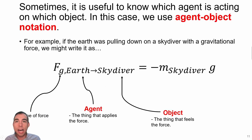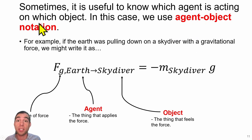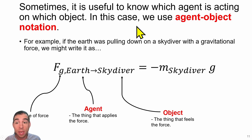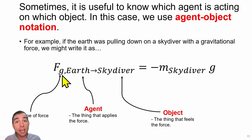Sometimes we'll have many forces acting, and it can be useful to be more specific than just writing 'force of gravity' or 'applied force.' To do this we'll use agent-object notation, which specifically labels which object is your system and which agents are acting on your system. Here we have a skydiver falling through the sky toward the earth and feeling a gravitational force.